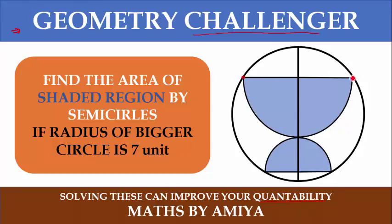These four points as shown in the figure are on the circle. This one is the diameter and this point is on the diameter and tangential to the smaller semicircle. If the radius of the bigger circle is 7 units, then you need to find the area of the shaded region, which means the summation of the areas of the semicircles. This is a Challenger.